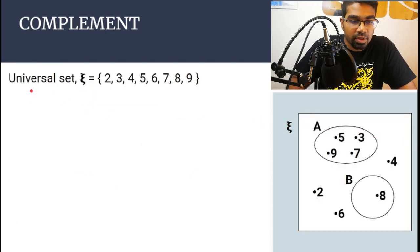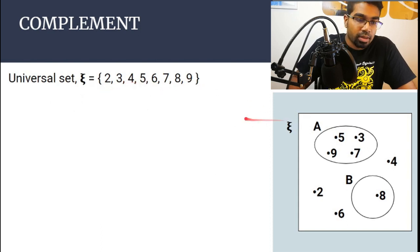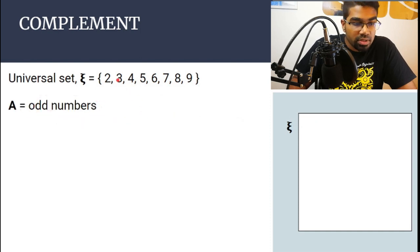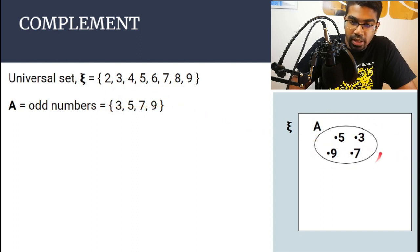Let's look at this example. We have a universal set consisting of numbers two to nine: 2, 3, 4, 5, 6, 7, 8, 9. Let's say A is the odd numbers, so the odd numbers here are 3, 5, 7, and 9. We draw set A with those elements.